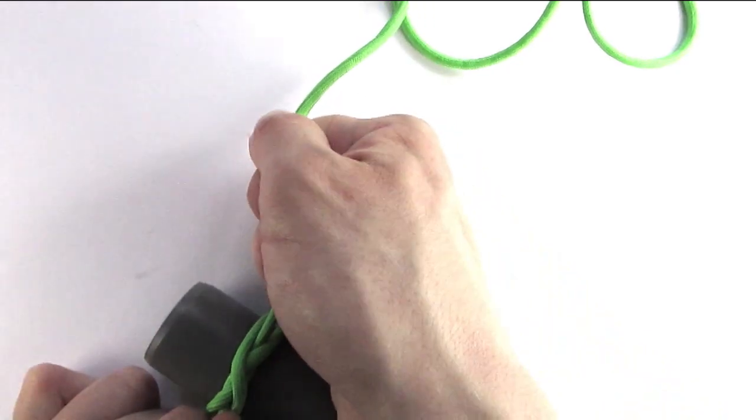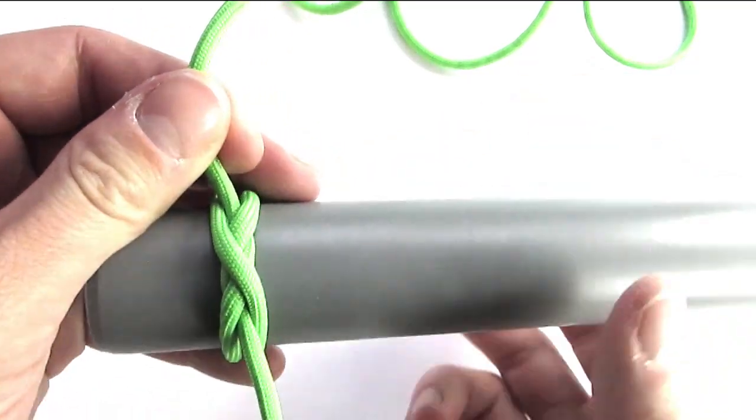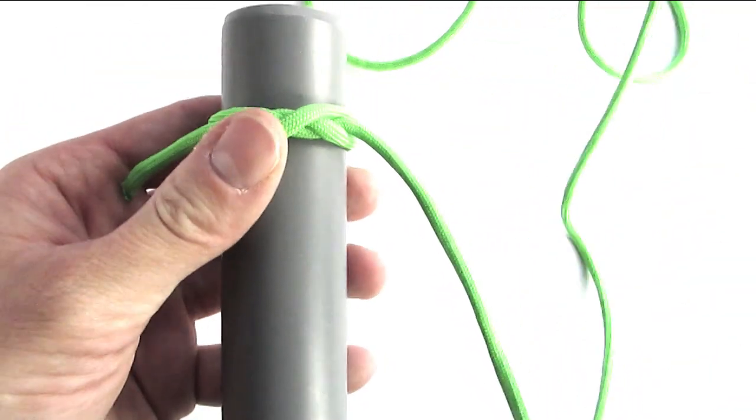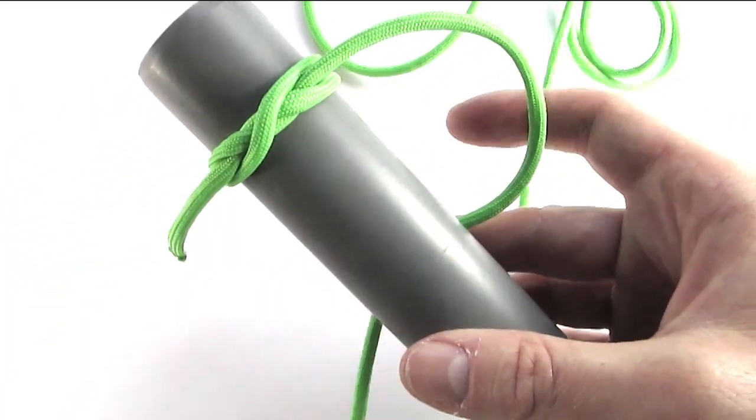Be sure to tighten your constrictor knot firmly and we're going to now simply continue a series of half hitches onto one side of our mandrel or our object we're wrapping.